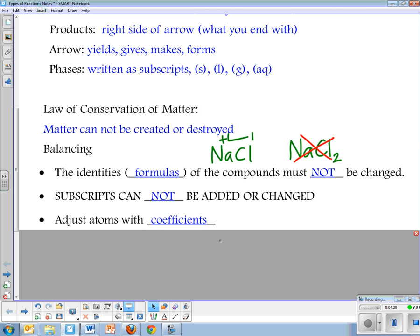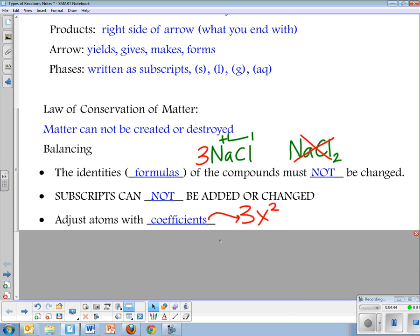The way we adjust atoms, the way we get the same amounts of atoms, is we use what are called coefficients. You've probably talked about coefficients in math. For instance, if you have x squared and there's a 3 in front of it, this 3 is a coefficient. It's that number in front. We'll do the same thing. We'll put numbers in front of formulas, like a 3 in front of NaCl. That's a coefficient.